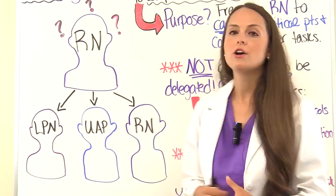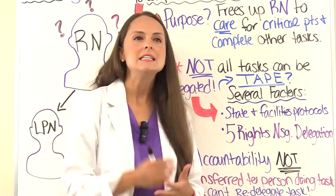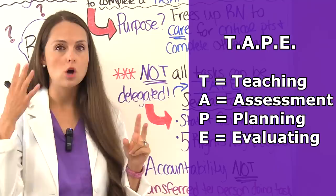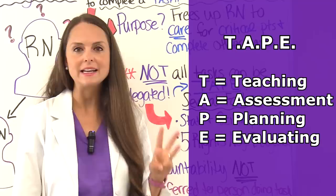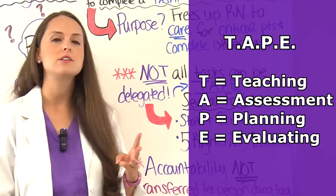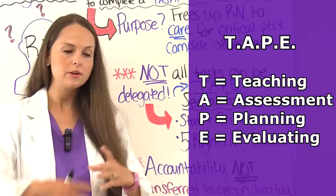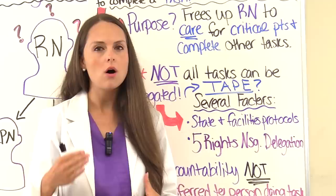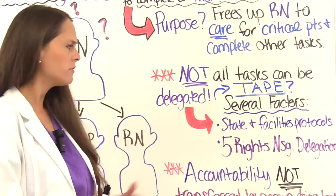First, ask yourself: does this task require TAPE? T is for teaching — if you have to educate the patient, that goes only to the registered nurse. A is for assessment — a comprehensive or admission assessment goes to the RN. P is for planning — developing the nursing diagnosis, nursing interventions, and care plan falls to the RN. E is for evaluating patient care — evaluating the plan of care and how the patient is responding. All of that falls to the RN and cannot be delegated to the LPN or nursing assistant.